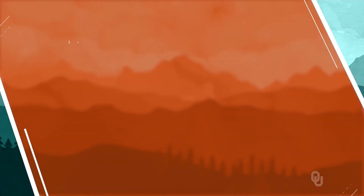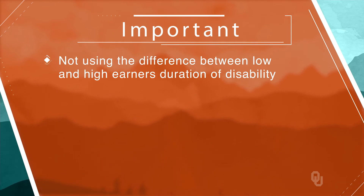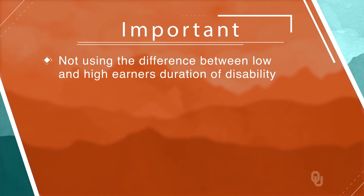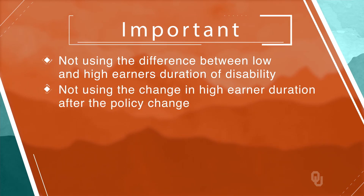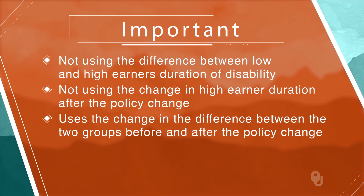The interpretation is that one effect of making workman's comp more generous for high earners is they spent an average of about one additional week away from work each time they made a successful workman's comp claim. Now, the low earners are not necessarily a valid direct control group for the high earners — they may differ in experience, education, ability, and even motivation. So it's important to emphasize what we are not doing. We are not simply using the difference between low and high earners in their duration of disability, nor are we simply using the change in high earner duration after the policy change. Diff and diff only uses the change in the difference between the two groups before and after the policy change to generate an unbiased estimate.